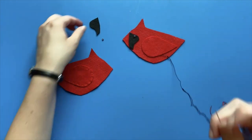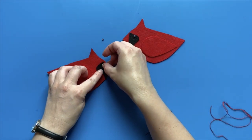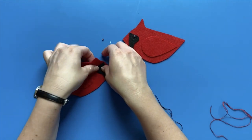Thread a needle with black thread for the face mask and tie a knot at the end. Stitch the mask onto the face, looking at the pattern for placement.